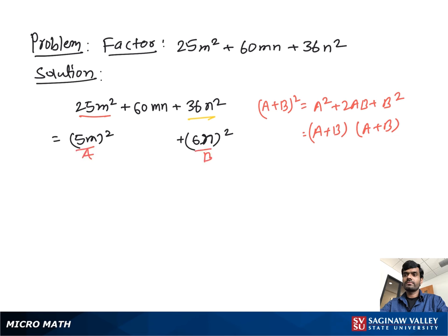Now if we suppose 5m as a and 6n as b, then we need the middle part which is 2ab. Then we write the middle part as 2 times 5m times 6n, which is 60mn.